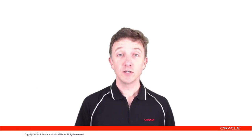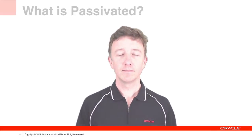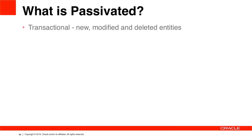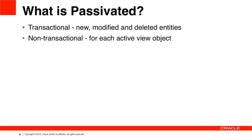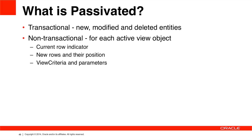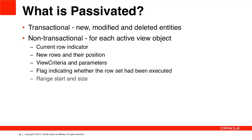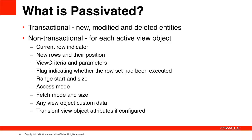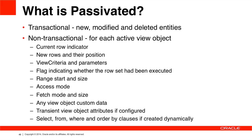So what exactly is Passivated? Passivation includes transactional data changes such as new records stored in the Entity Object cache, modified entities, and deleted rows. There is also non-transactional data stored, including a lot of state around view objects: the current row indicator, any new rows and their position in the view object, view criteria applied and bind variable parameters, flags indicating whether the row set has been executed, range start and size, access mode, fetch mode and size, any view object custom data, transient view object attributes if configured, and select/from/where/order-by clauses if created dynamically.